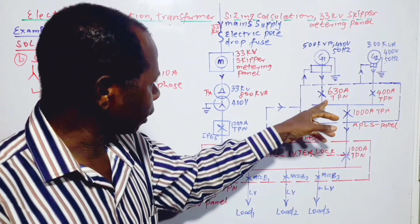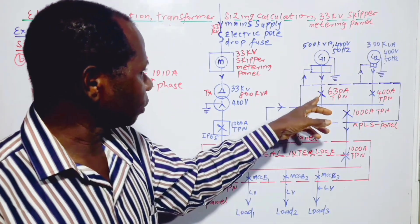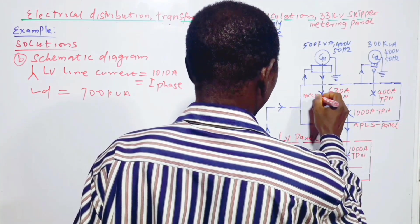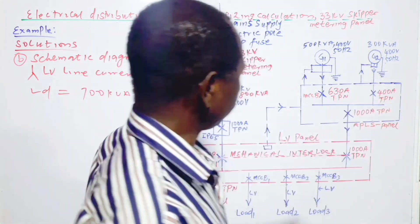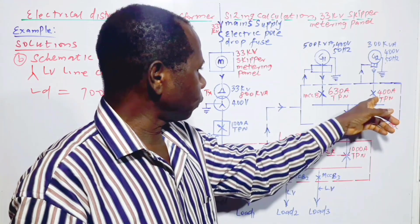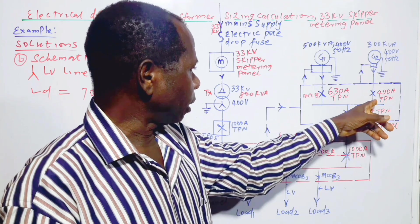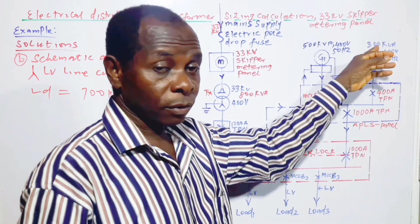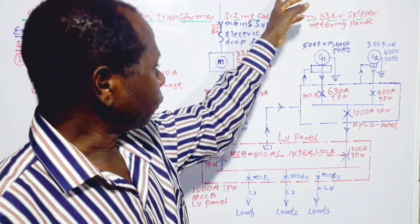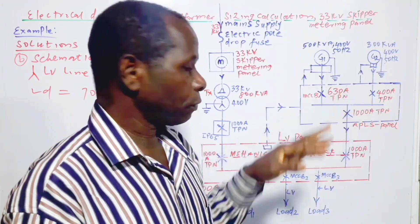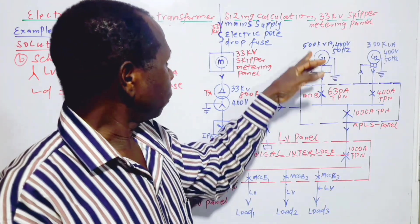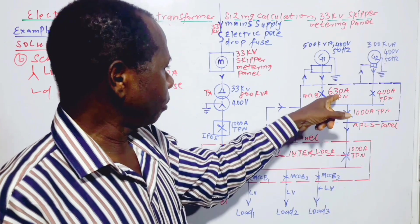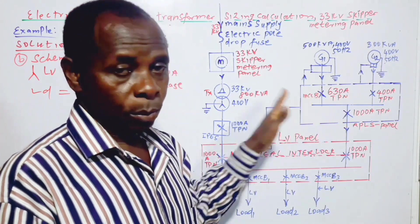So for the 500 kVA, we use this 630 amp circuit breaker MCCB to protect it. This is MCCB. And this is also MCCB. So for the 300 kVA, we use 400 amp circuit breaker to protect it. Because the maximum current that can be drawn from this one is about 433, so 400 amp, we protect it very well. This one, we can have a maximum current of about 721, so 630 amp, we protect it.